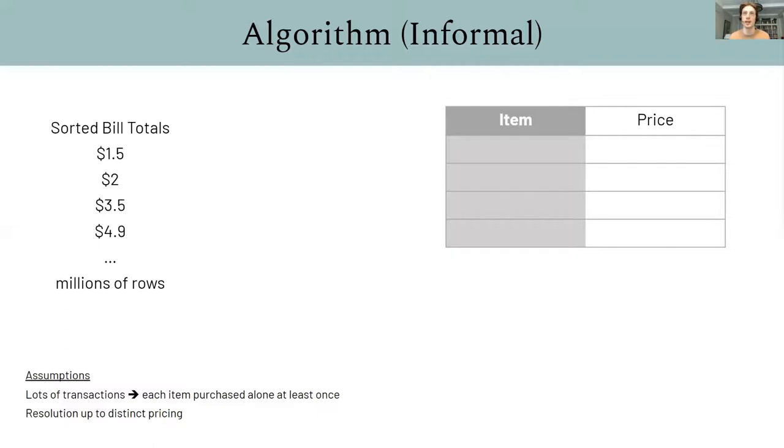In other words, in a million transaction totals, someone will buy just a side order of guacamole and nothing else, even if it's unusual. The second insight is that we can only try and identify product purchases up to distinct pricing. So, if two products both cost $10, there's simply not enough information for us to tell which product is purchased without additional assumptions.